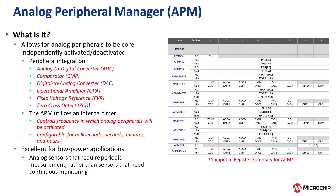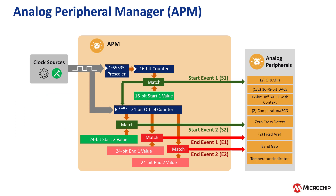The Analog Peripheral Manager, or APM, is a new feature included on the PIC-18 Q71 family of microcontrollers that helps reduce overall power consumption by allowing analog peripherals such as the ADC, Comparator, Digital-to-Analog Converter, Operational Amplifier, Fixed Voltage Reference, and others to be core-independently turned on and turned off to save power. Typically, analog peripherals consume more power than digital peripherals even if they are idle. This peripheral is ideal for low-power applications that use analog sensors that require periodic measurement rather than sensors that need continuous monitoring. The APM allows users to specify custom time intervals in which analog modules will activate periodically to perform a desired functionality before deactivating and returning to a low-power state.